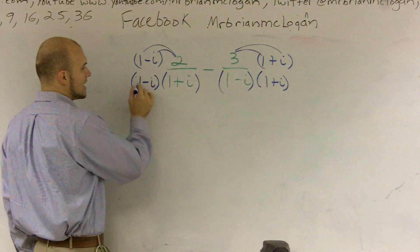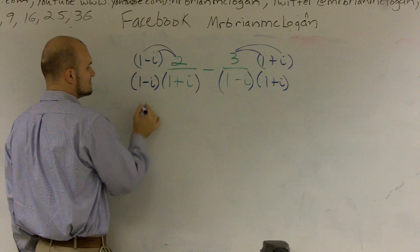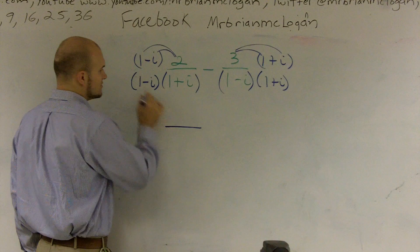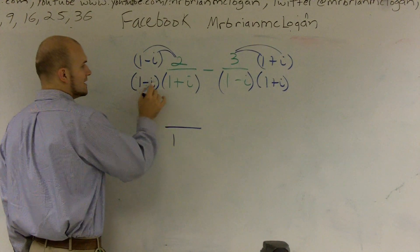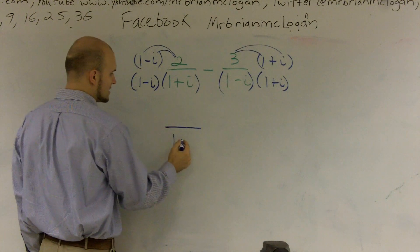So therefore, my middle terms are going to cancel out. So really, all I need to focus on is multiplying my first two numbers. 1 times 1 is 1, and a negative i times i is going to give me a negative i squared.